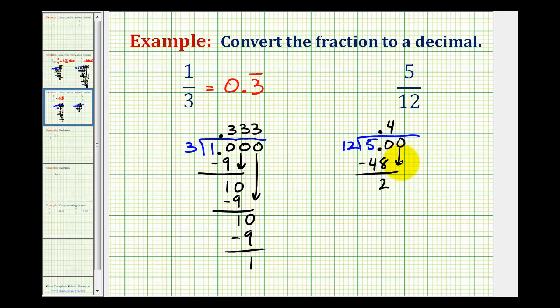Add another zero and bring it down. So now we have twenty. Now we want to ask how many twelves there are in twenty. That would be one. One times twelve is twelve. This difference is eight.